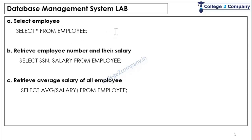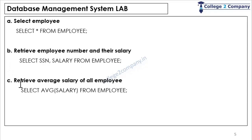The first query is a simple query — SELECT * FROM employee — which displays all records in the table. The next query retrieves employee number and their salary, so we use SELECT SSN, salary FROM employee to retrieve only the employee number and their respective salary.